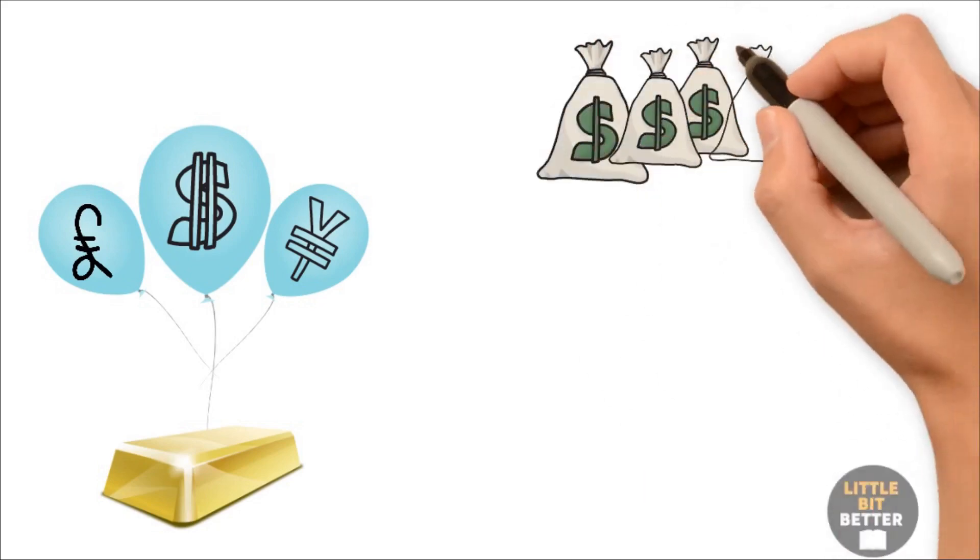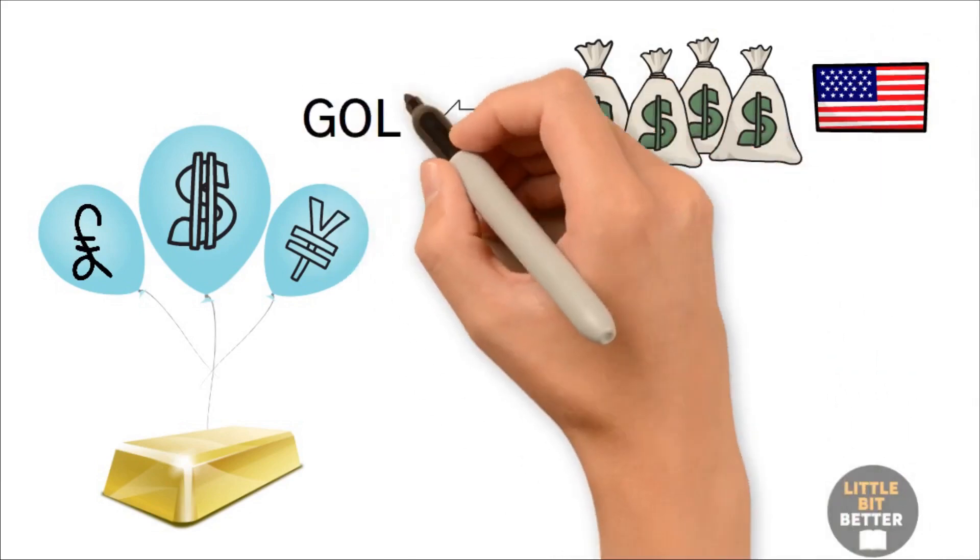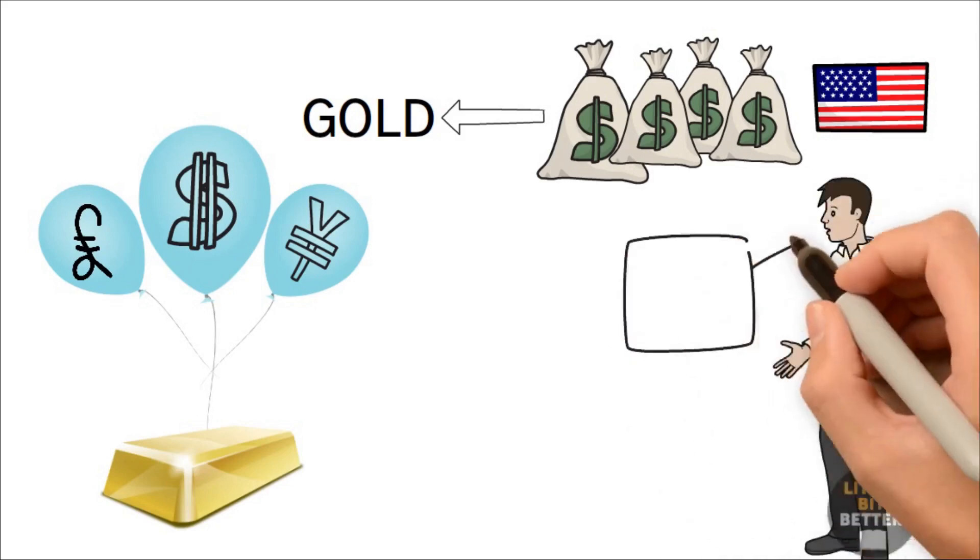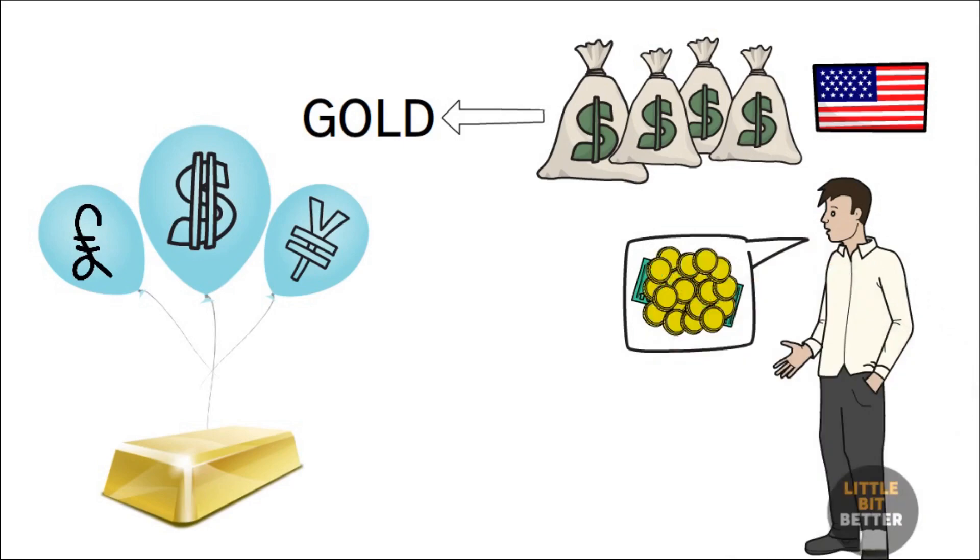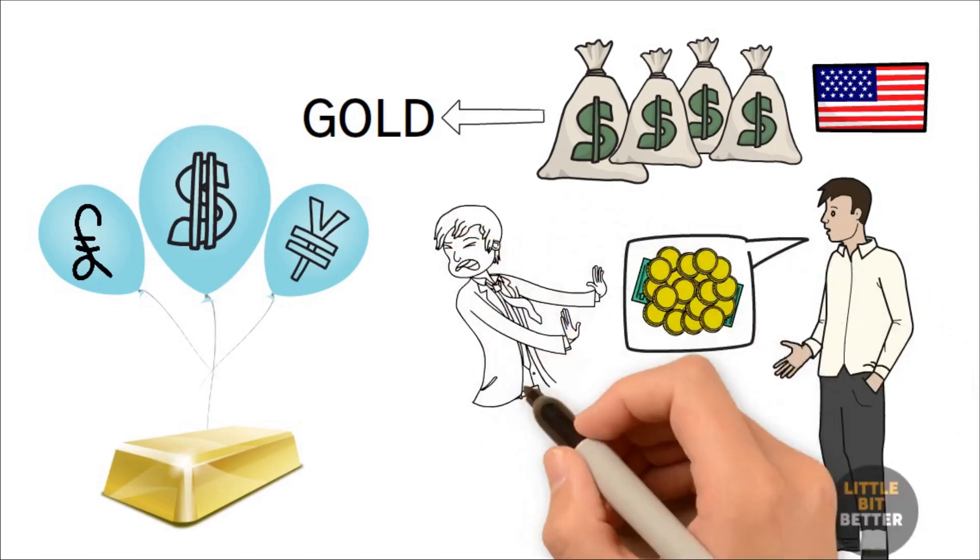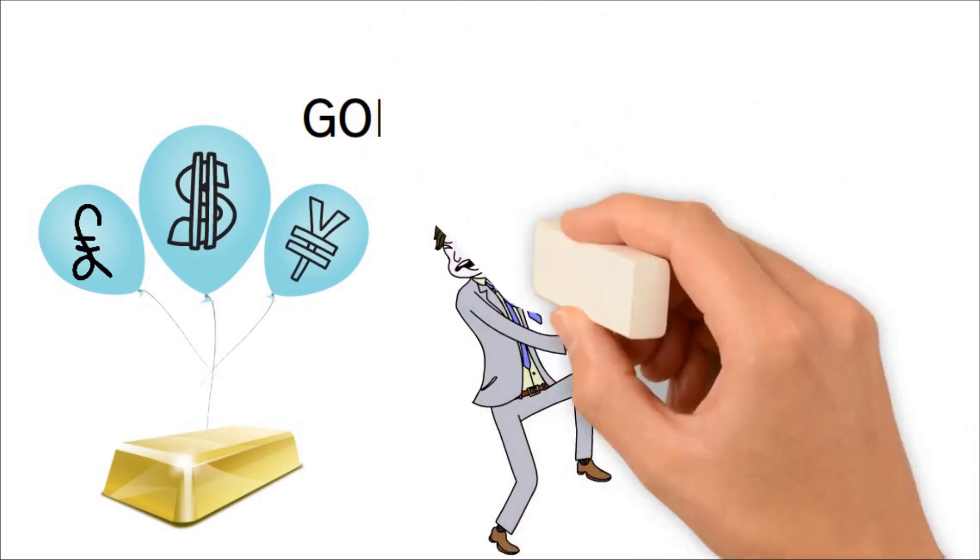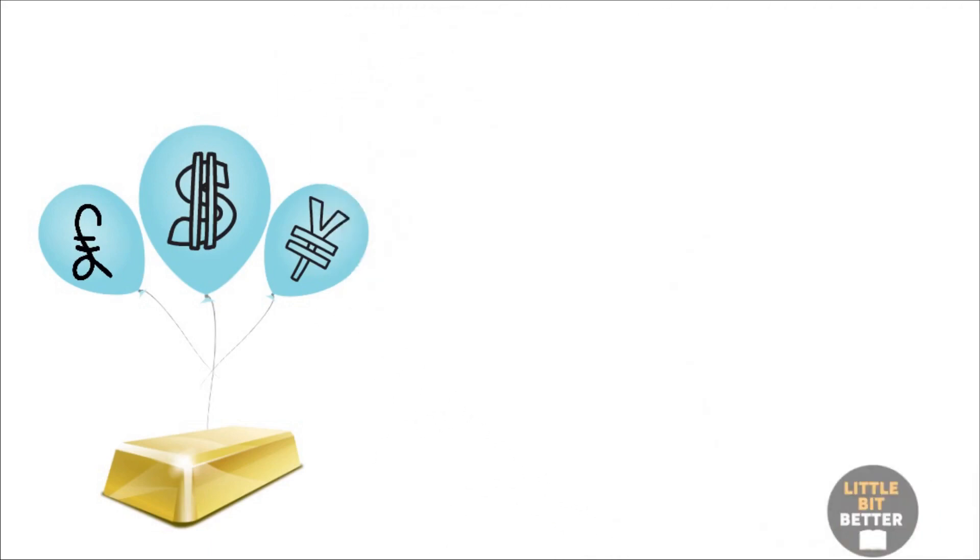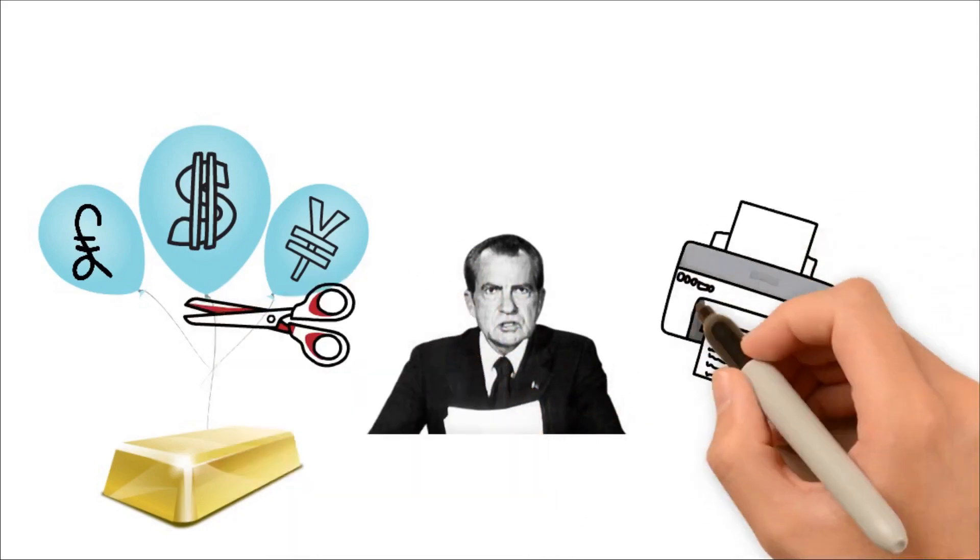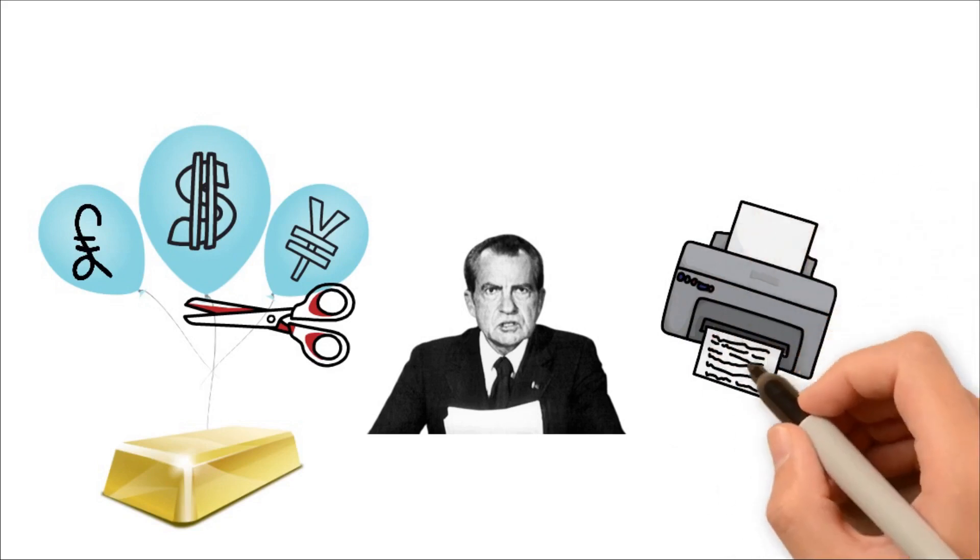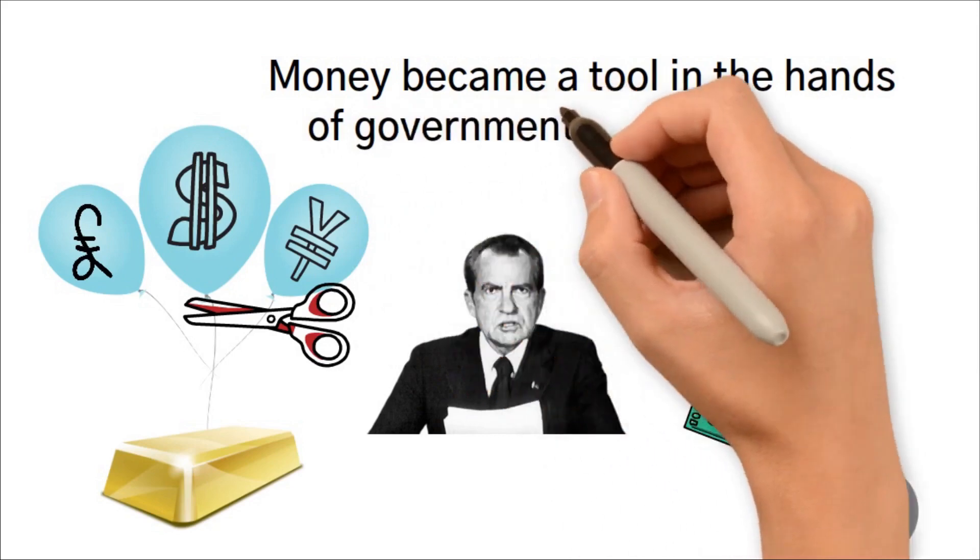And it came to a point that there was a lot of printed money, which was not backed by any gold. So if people started to demand gold in return for their dollars, America would not be able to give back their gold. The next logical step from America's perspective was to end the gold standard, which eventually happened in 1971. American President Nixon cut the last tie between gold and the dollar, which meant America could now print money easily, as much as they wanted. Money became a tool in the hands of government and politicians.